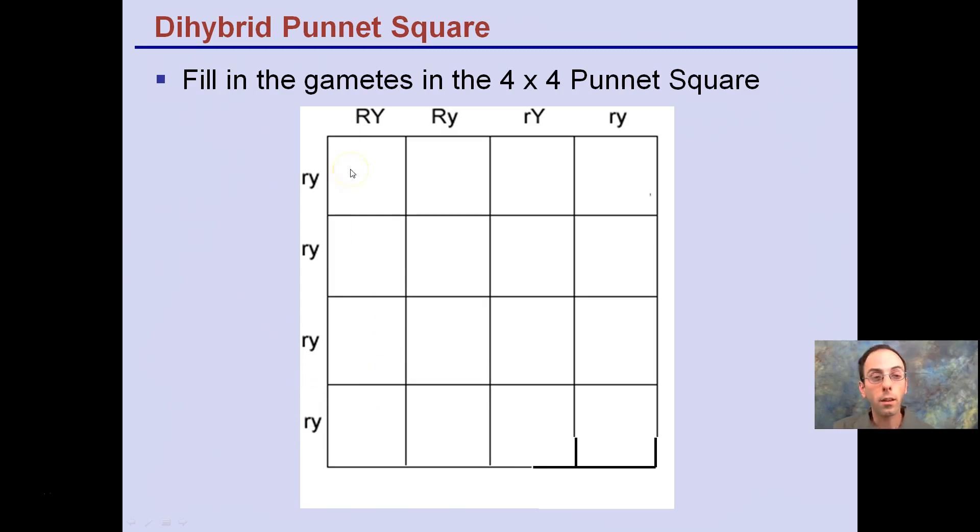Just as we saw in Punnett square basics, we did the same cross, the same drag down. So big R would be here, here, here, and here. But remember big R with little r, big R with little r, so on and so forth.